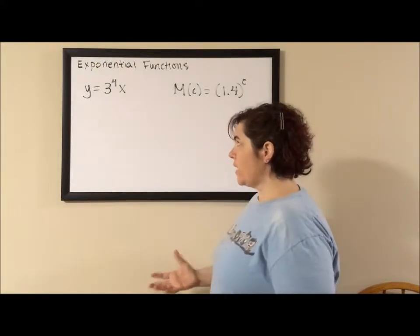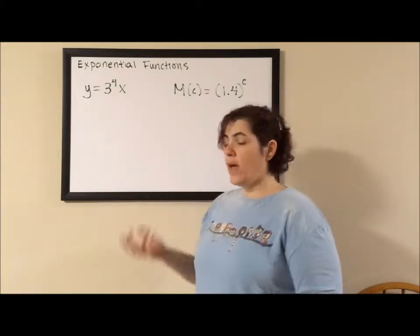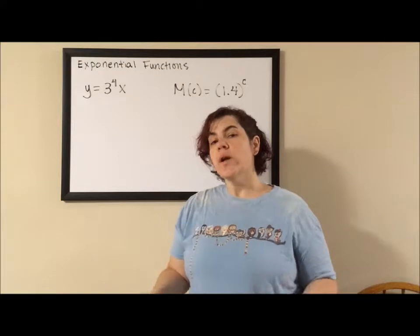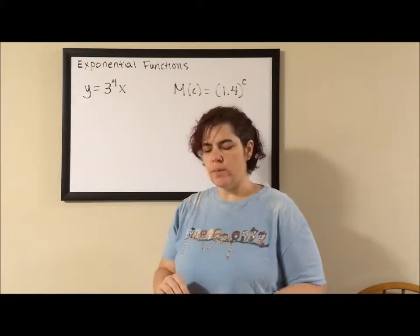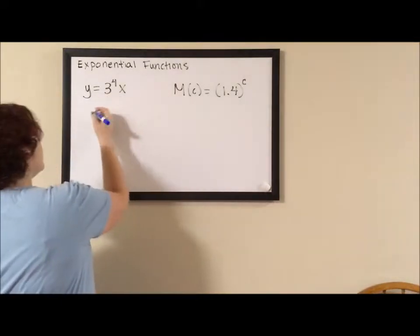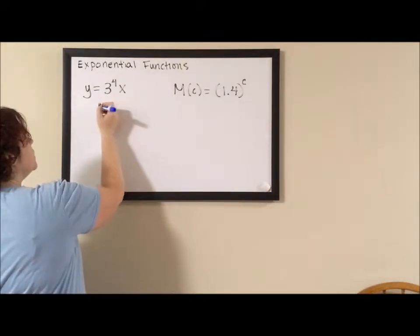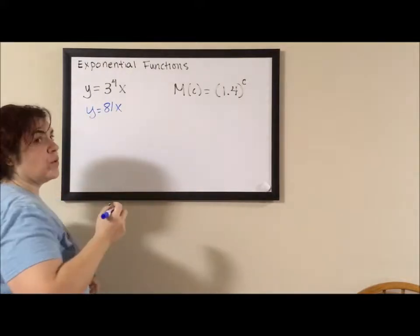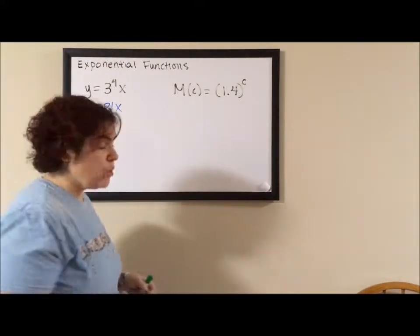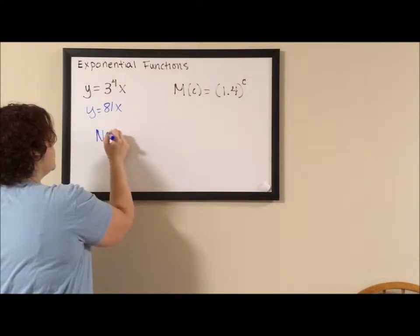For my first example, I have y equals 3 to the fourth x. Well, we don't have an exponent that's a variable. We do have an exponent, but it's not a variable. This is really an equation of a line. 3 to the fourth is 81. This is really y equals 81x. This is a line with a really steep slope. So no, this is not exponential.